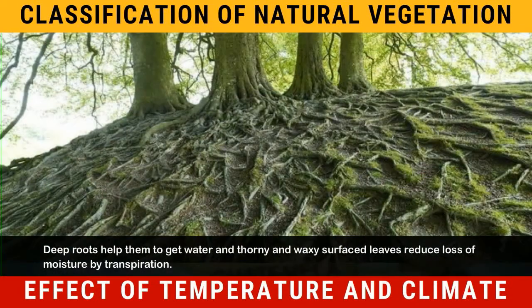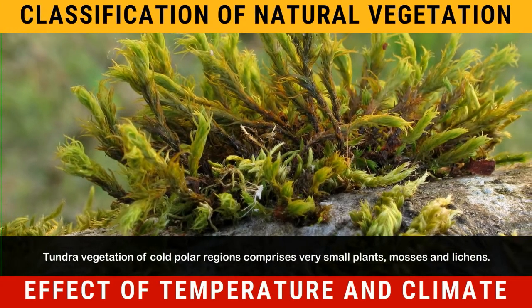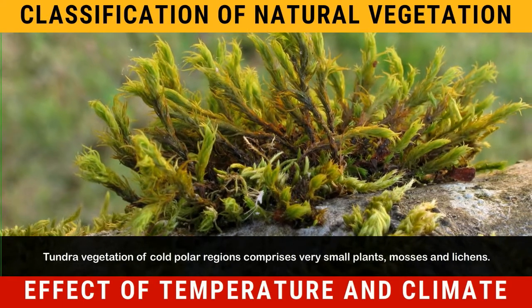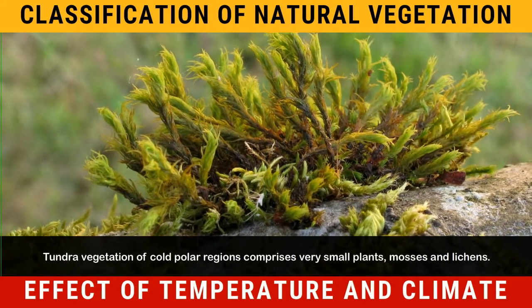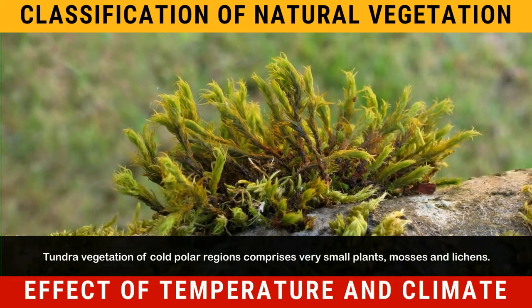Deep roots help them to get water, and thorny and waxy surfaced leaves reduce loss of moisture by transpiration. Tundra vegetation of cold polar regions comprises very small plants, mosses and lichens.